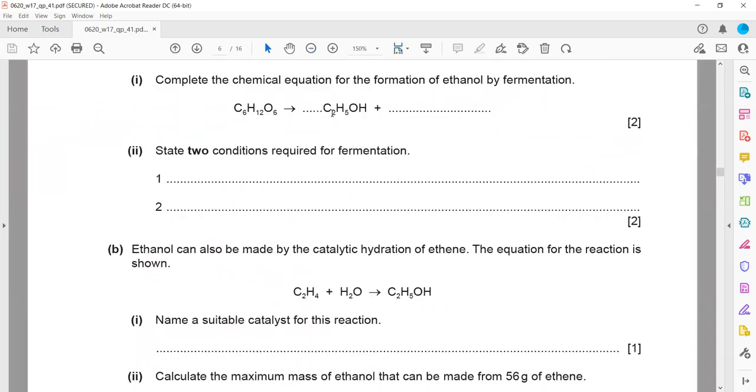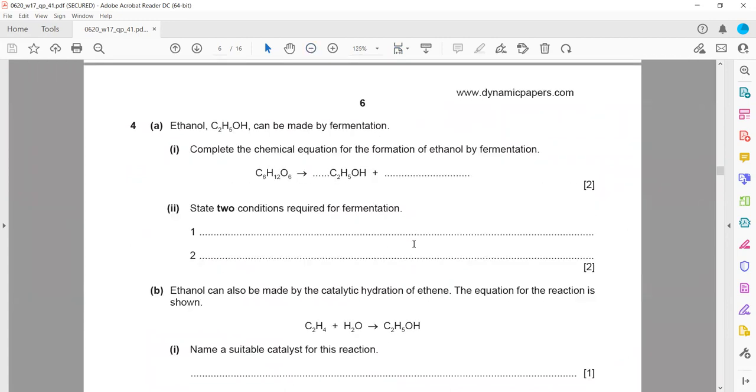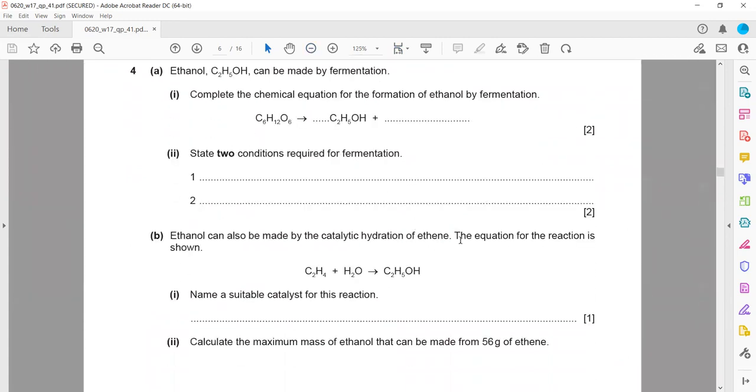Question 4: Ethanol, C2H5OH, can be made by fermentation or by reaction of alkene with steam or hydration of alkene. Complete the chemical equation for formation of ethanol by fermentation. In fermentation, a sugar solution results in formation of ethanol and carbon dioxide.